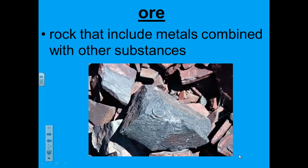Ores are rocks that include metals combined with other substances. People rely on chemistry to release metals from their ores. For example, iron ore contains iron oxide. Heating iron ore in a hot furnace with solid carbon allows the iron to separate from the oxygen in the ore. The result is pure iron and carbon dioxide.